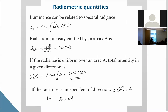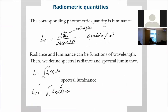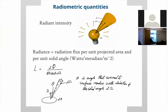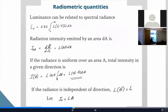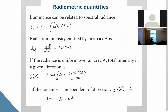Luminance can be related to spectral radiance by integrating spectral luminance multiplied by the eye's sensitivity function V(λ) over all wavelengths, times the constant 683, to get total luminance. The radiation intensity emitted by an area A is flux divided by solid angle, which equals L·cosθ·dA for an infinitesimal area. For a uniformly emitting surface, the total intensity in a given direction is L(θ) × A·cosθ.